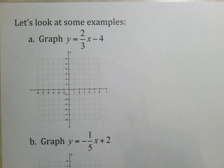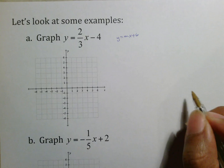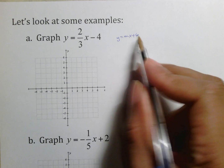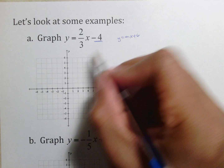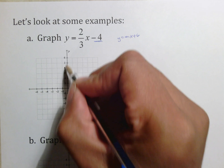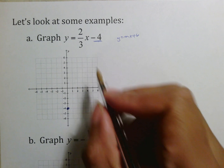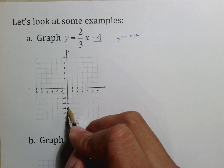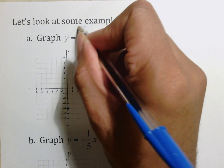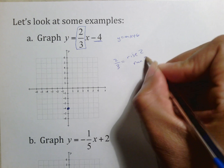Let's look at some examples. You have y equals two-thirds x minus four. Matching this to y equals mx plus b, I go to b first. The b value here is negative four, which tells me my y-intercept is negative four. On the y-axis, negative four is here. So the first thing I do is recognize that b is negative four, which means go down four. The second thing is m, which is my slope: two-thirds means rise two, run three.